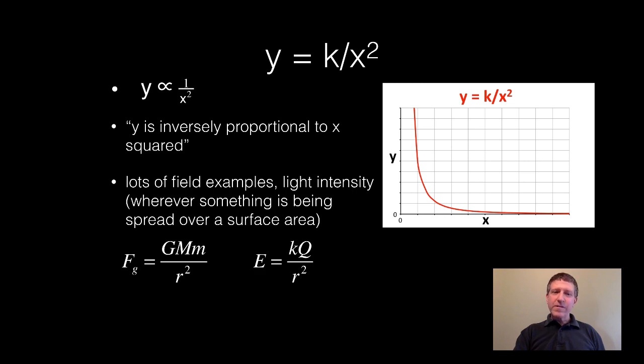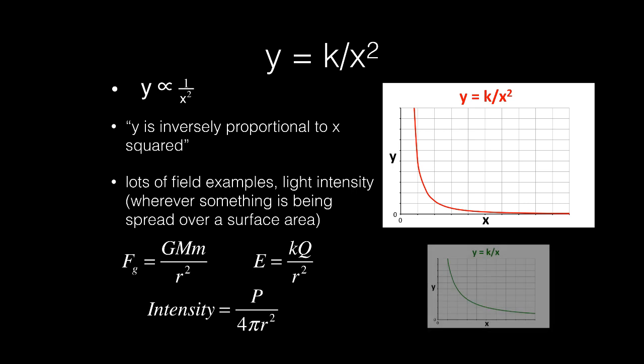We also have electric fields, and light intensity, as I mentioned before, is the power of the light source over 4 pi r squared, which is just the area of a sphere that that light gets spread out over. You can notice right here the similarity between y equals k over x squared and y equals k over x. Sometimes just by inspection, it is very hard to tell the difference, which is why looking at our theoretical relationships are such an important part of this process.